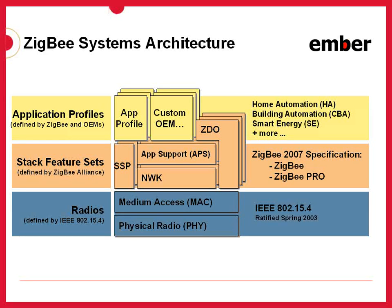Finally, at the highest level, where the application interacts, there's a set of guidelines known as the application profiles. Each of these are defined by a particular working group within the ZigBee Alliance, typically comprised of OEMs, vendors, and other parties who have the expertise or a vested interest in the use case depicted by the profile. Examples include commercial building automation, smart energy, and home automation. Proprietary application profiles are also possible at this layer.